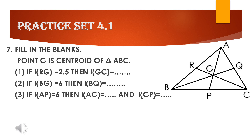Now we will see problem number 7 from practice set 4.1. We are not doing problems 2 to 6 today because they are construction sums, which we will do in the next class. In the figure, triangle ABC has three medians BQ, CR, and AP, with point of concurrence G. Since the point of concurrence of medians is the centroid, G is the centroid of triangle ABC. Using this property we will find GC, BQ, AG, and GB.